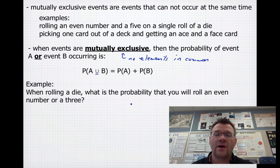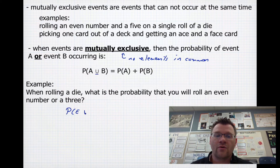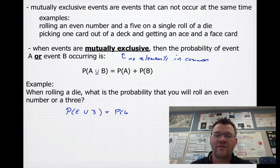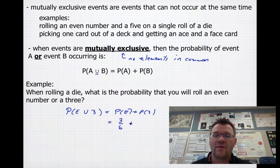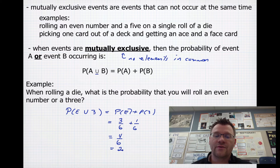For example, when rolling a die, what's the probability that you will roll an even number or a 3? The probability of an even number or a 3 is the probability of an even number plus the probability of a 3. With a regular dice, the probability of rolling an even number is 3 out of 6 — favorable outcomes divided by total outcomes. The probability of a 3 is 1 out of 6. So your total probability would be 4 out of 6, or 2 thirds.